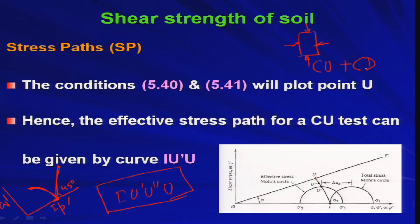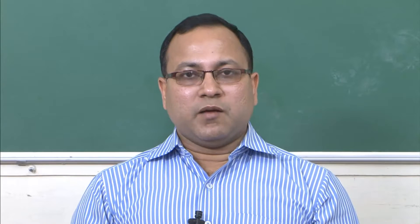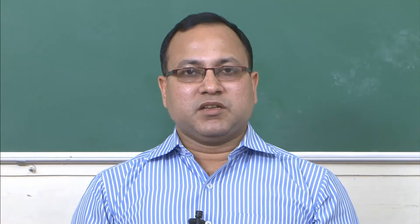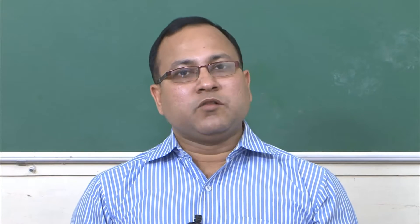In a combined CU then CD test, the stress path would first follow the CU curve and then transition to the 45-degree CD path. By seeing the stress path you understand how the test progressed. In the next lecture, we will discuss the vane shear test and the Skempton pore water pressure parameters, which will conclude the chapter on shear strength. Thank you very much.